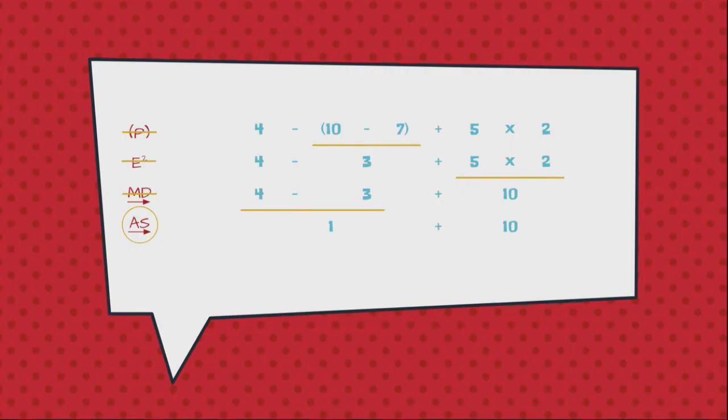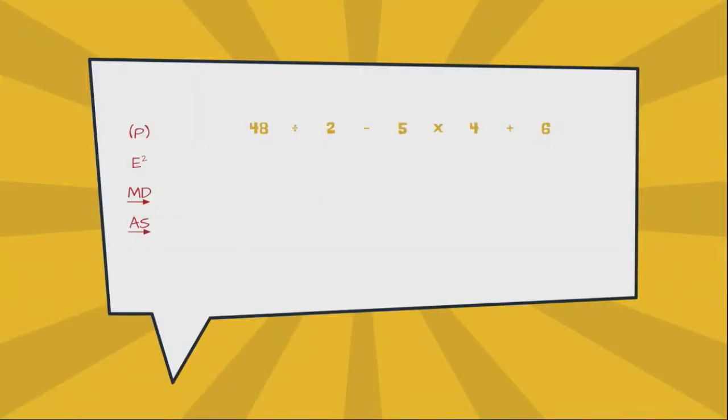So 4 minus 3 is 1. I will bring everything else down, which is just plus 10. Now I have my fourth step of this whole problem. It's the only thing that's there. It's 1 plus 10. That gives me 11 and the problem is solved. We did that in four steps, but more importantly we stay organized as we work down the paper.